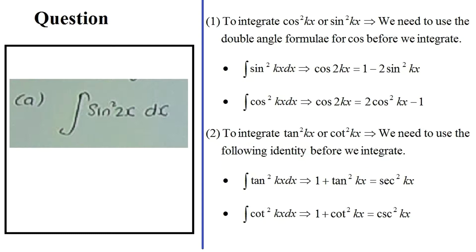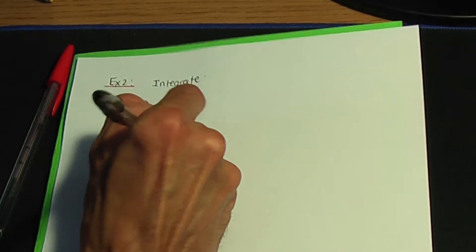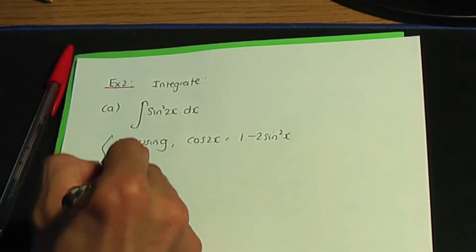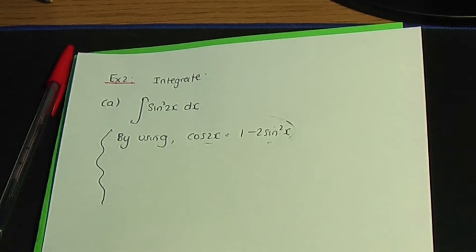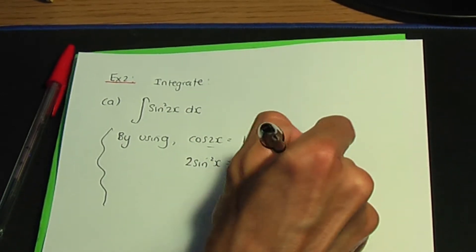To integrate sin²(2x), remember to use the double angle identity for cos related to sin squared. Using cos 2x = 1 − 2sin²x, rearranging gives 2sin²x = 1 − cos 2x, and dividing by 2: sin²x = 1/2 − (1/2)cos 2x.